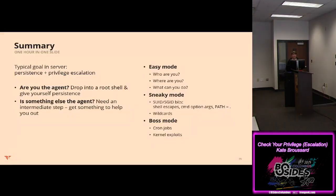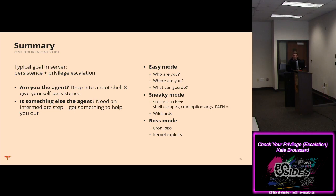In summary, the goal within a web server — once you've made it through the superficial layer — is to get persistence and escalate privileges. Our framework was thinking about who's the agent: if it's you, drop yourself into a shell and give yourself persistence. If something else is the agent, you need that intermediate step — find a utility or process that will help you execute a root shell. Those were our easy, sneaky, and boss modes. Linux tends to be fairly consistent across various versions in where things live, where to look for particular utilities, what utilities come standard. So if you get more familiar with the Linux environment, it gets a lot faster to determine what paths are open to you.